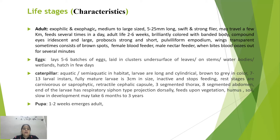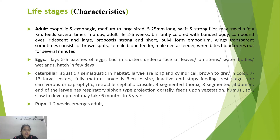Their proboscis is strong and short, with pulvilliform pads and podia on their legs. Wings are transparent and sometimes bear brown spots. Females are blood feeders while males are nectar feeders; when the female bites, blood flows for several minutes from the host body. The adult fly lays five to six batches of eggs in clusters on the undersurface of leaves, stems, or near water bodies and wetlands, hatching in a few days.